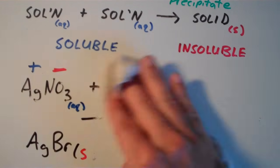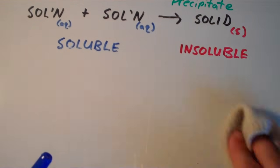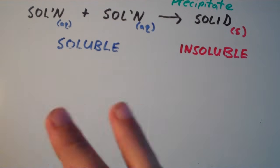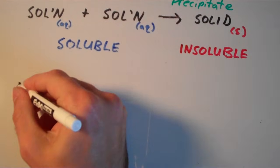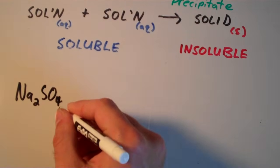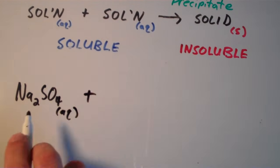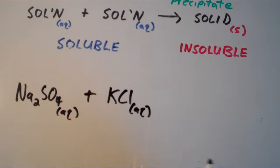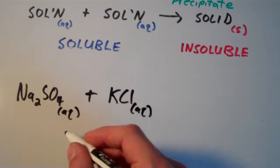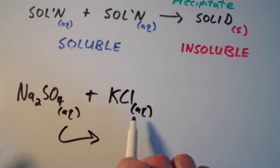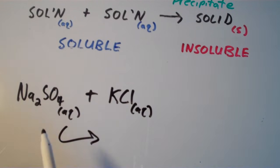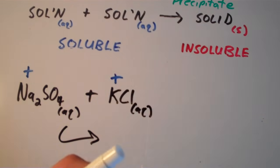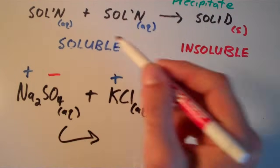Let's go through another example. Suppose I have sodium sulfate, Na2SO4 — if you look at the solubility rules, that's aqueous — and KCl, potassium chloride, which is also aqueous according to the rules. So we have Na2SO4(aq) and KCl(aq). We write out the possible products. Identifying our cations: sodium ion and potassium ion. Identifying our anions: sulfate ion and chloride ion.